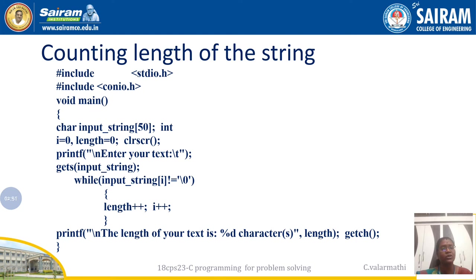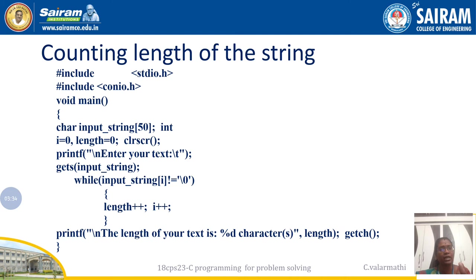These are the initialization parts — i = 0 is the initial value for the counter variable, and length = 0 is the initial value for the length variable. These are the prerequisites needed to implement the task. Then, using the gets() function, I scan the input string and store it in the variable input_string.